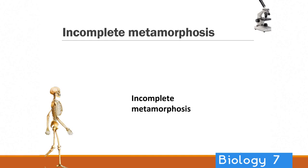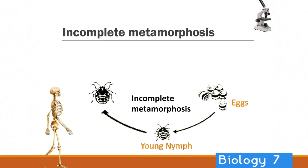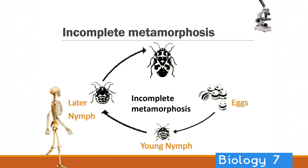Let's have a closer look at incomplete metamorphosis. Here we start off with eggs, which transition into a young nymph, which then develops into a more developed nymph, which then changes into an adult. As you can see, there is a change in how this little beetle looks — obviously the size, but also changes within the way it moves and functions.